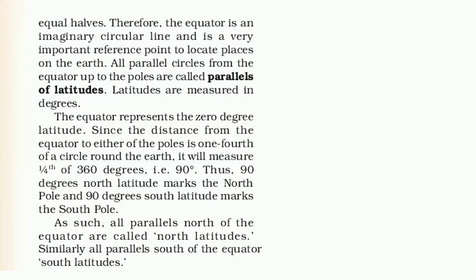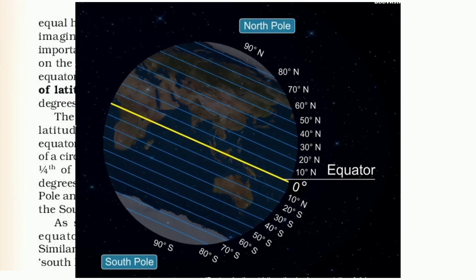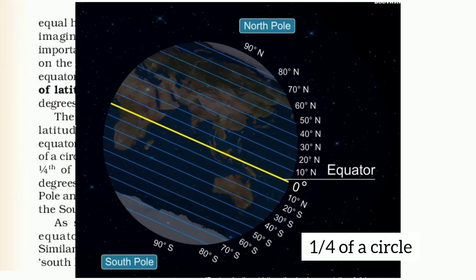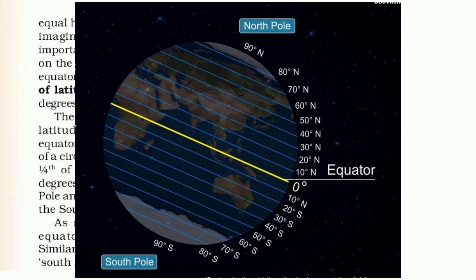Children, the equator is 0 degree latitude. The distance from the equator to either the North Pole or South Pole is one-fourth of a circle. Since one full circle is 360 degrees, one-fourth of that is 90 degrees. So, 90 degrees North latitude marks the North Pole, and 90 degrees South latitude marks the South Pole.